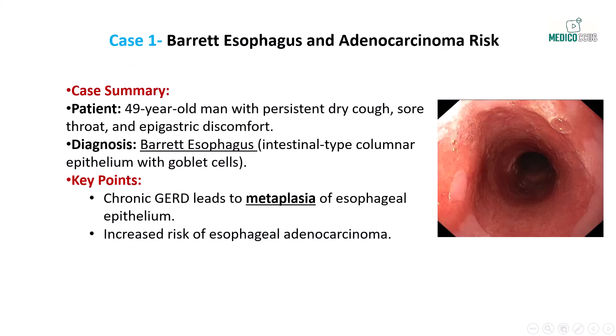Let's move to the next frequently tested topic. A 49-year-old man presents with a persistent dry cough that occurs mainly at night, alongside frequent sore throat and occasional epigastric discomfort. Despite trying various over-the-counter remedies, his symptoms persist. The patient has obesity and diet-controlled type 2 diabetes mellitus, but denies smoking or alcohol use. Physical examination and chest x-ray are unremarkable, and pulmonary function testing is normal. However, upper gastrointestinal endoscopy with biopsy reveals intestinal-type columnar epithelium with goblet cells in the lower esophagus, a hallmark of Barrett esophagus. Barrett esophagus is a metaplastic condition where normal stratified squamous epithelium is replaced by intestinal-type columnar epithelium due to chronic exposure to acidic gastric contents. This metaplasia significantly increases the risk of developing esophageal adenocarcinoma.